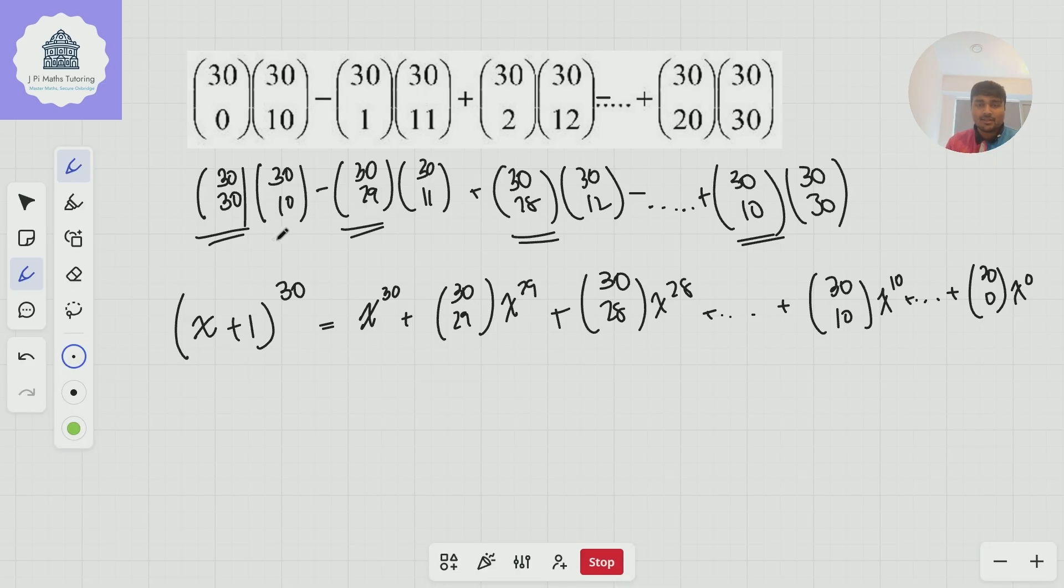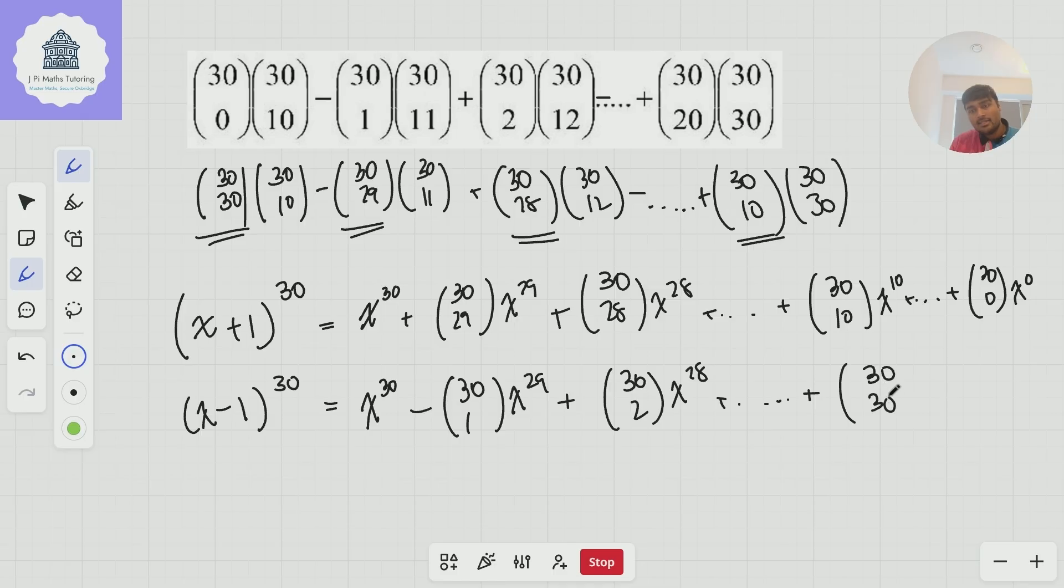Now, how about these terms? 30 choose 10, 30 choose 11, and so on, up to 30 choose 30. Well, that's the same thing, except this time I want to also ensure I get these minuses in every other term. How can I do that? I can just, instead of making x plus 1, I can make it x minus 1 to the power of 30. And that gives me x to the 30, minus 30 choose 1, x to the 29, plus 30 choose 2, x to the 28, and so on, all the way up to 30 choose 30, x to the 0.